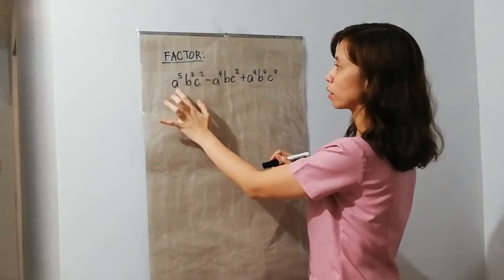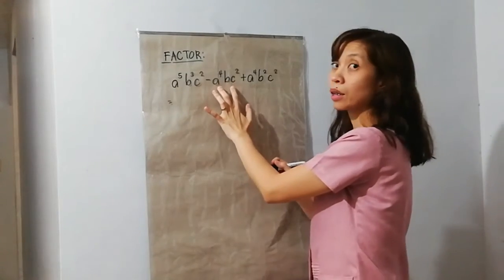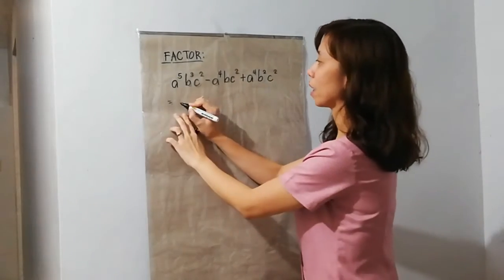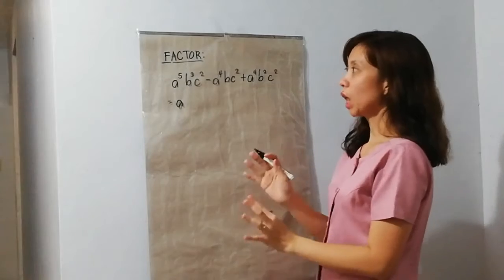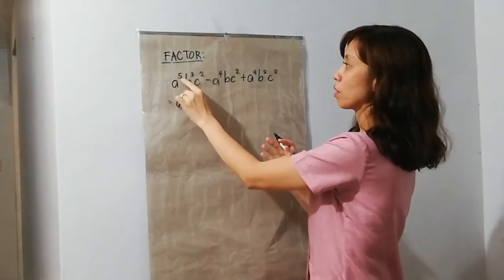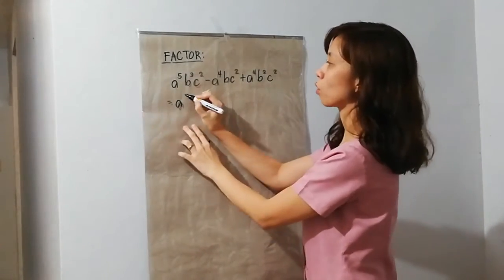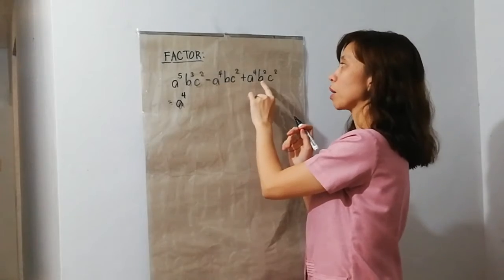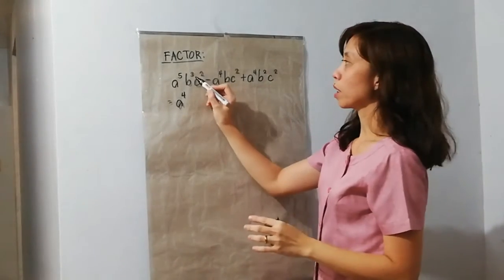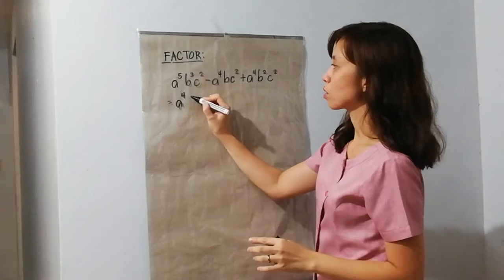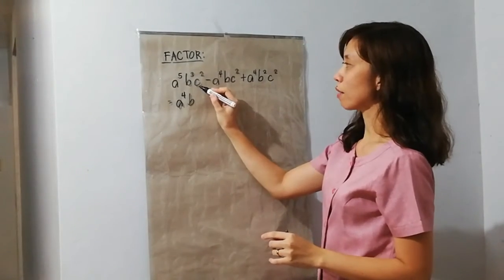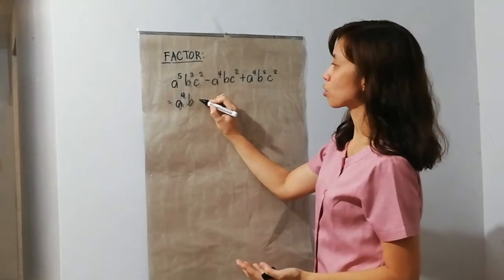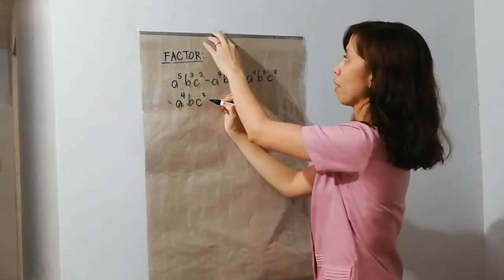So, sa first term meron tayong A. Tingnan natin sa second term, kung meron din A — there's also A. Sa third term, meron din tayong A. So, alam na natin that A is a common factor. Ano ngayon ang exponent? This is 5, this is 4 and 4. So, 4 ang common factor. Next, we have B — meron din nitong B, meron din nitong B. The least exponent is 1.